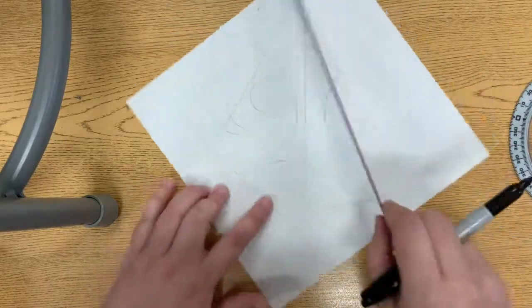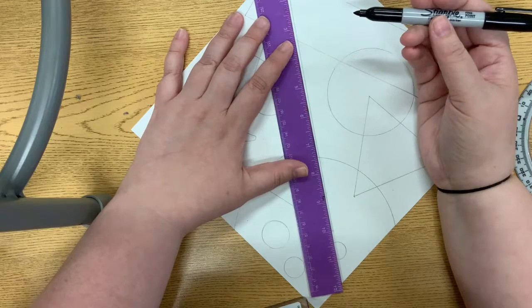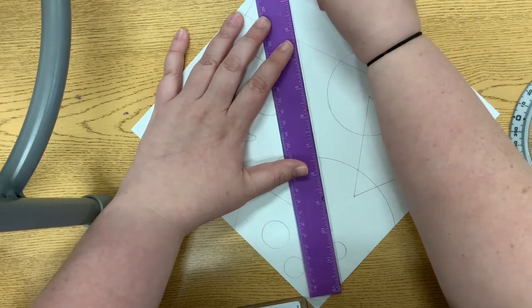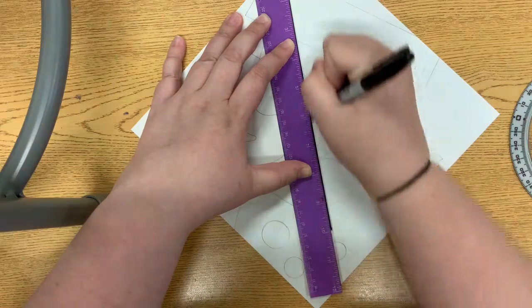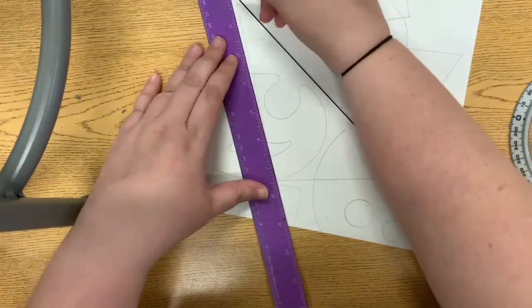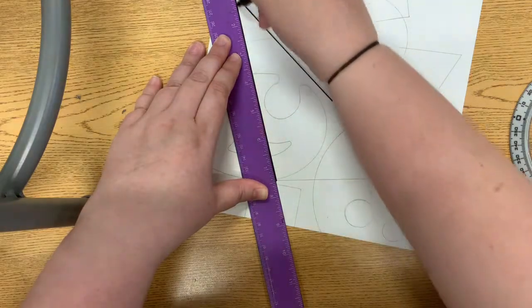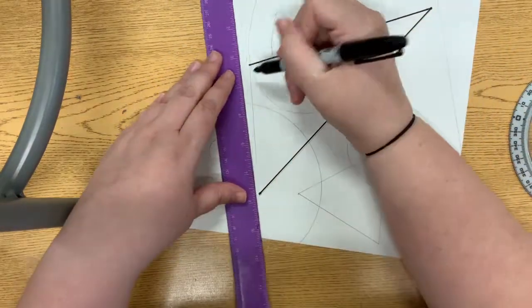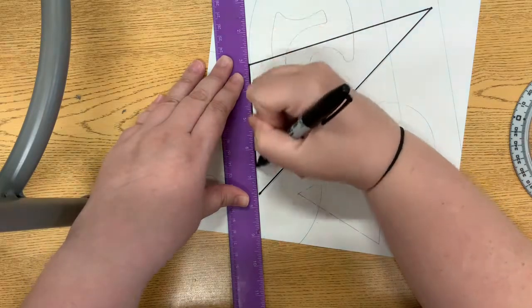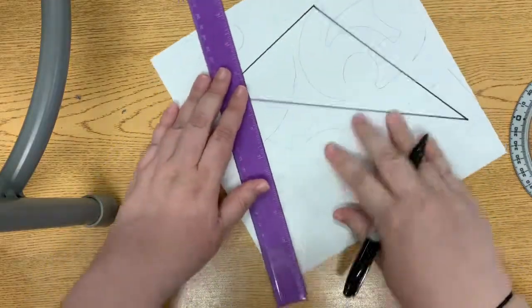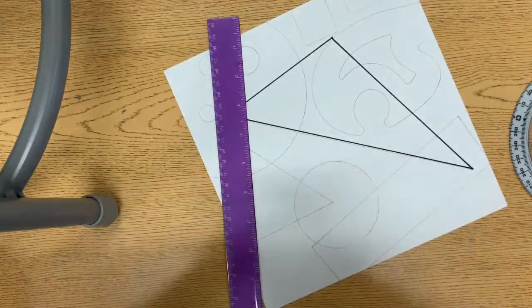I'm going to use my ruler when tracing to keep my lines straight. It's okay if it doesn't line up perfectly because I'll erase my pencil marks. This will help our shapes stand out. I'm going to finish tracing.